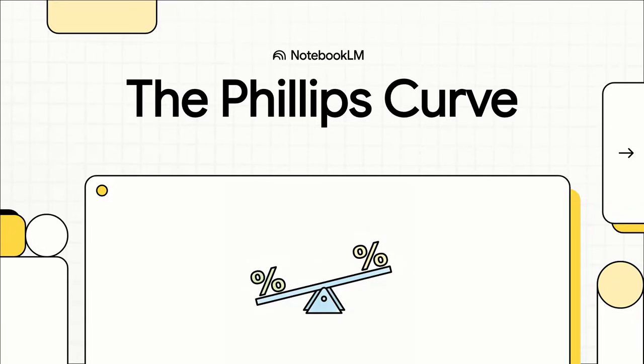Welcome to The Explainer. Today we're going to break down one of the biggest dilemmas in all of economics, the Phillips Curve. It's all about a tough choice, a trade-off that pretty much every government has to deal with.